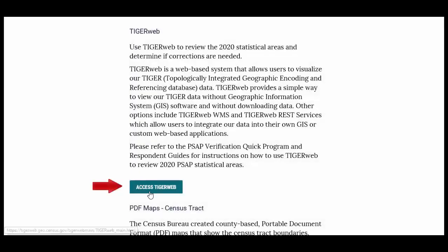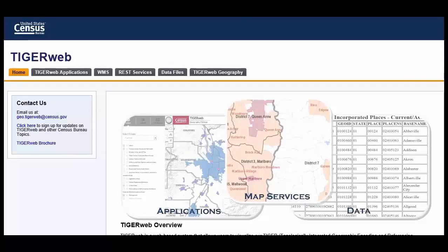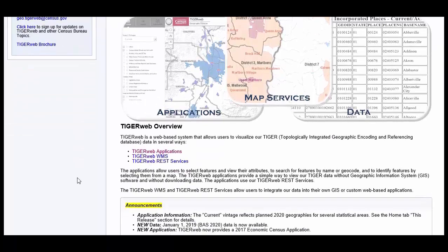Click on the Access TigerWeb link from the PSAP website or verification announcement. TigerWeb is a web-based system that allows users to visualize data from the Topologically Integrated Geographic Encoding and Referencing Database, or TIGER, in three ways.